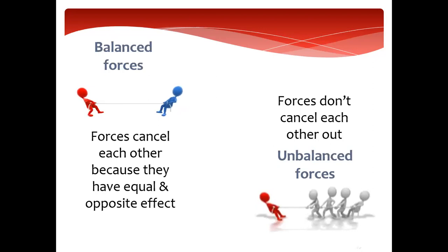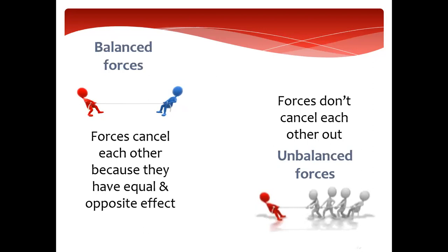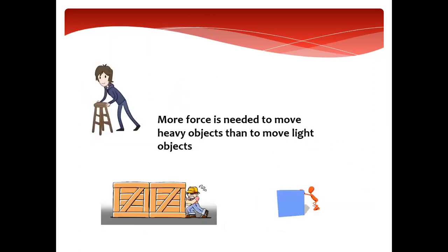The unbalanced force means that they are not canceling each other — they are not equal. This is unfair. For example, in this picture, one boy against four boys. Are they equal? No. So they will not cancel each other. Then we said that heavy objects need much more force, much more power to move them, because they are heavy.